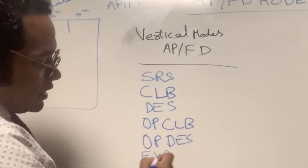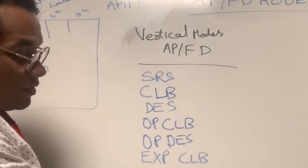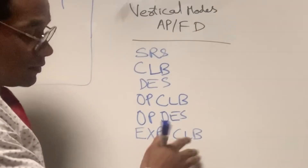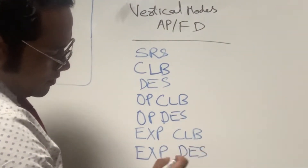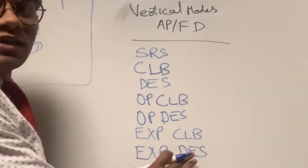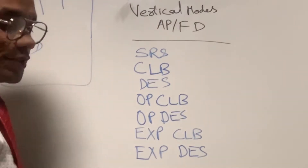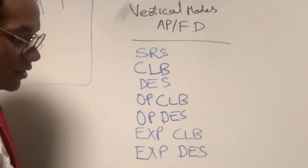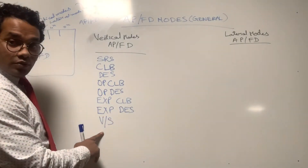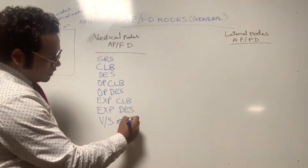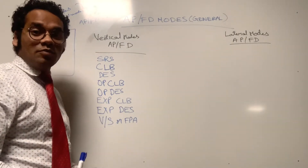Next we have OP DES, which means open descent. Then EXP CLB, which means expedite climb, and EXP DES, which means expedite descent. Remember these two — expedite climb and expedite descent — are optional; they are not present in some MSN numbers of the A320.